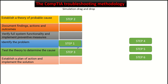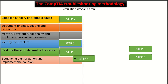So we know the third step. Step four is to establish a plan of action and implement the solution. This simulation is a learning exercise, so you will learn more details about troubleshooting and it will help you memorize the steps, which are an important part of the exam. Let's say you've already tested the theory to determine the cause — you know what's going on — and now you need to establish a plan of action and implement the solution.